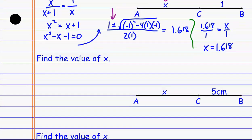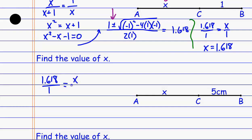For example, rather than deriving x as the geometric mean and doing the quadratic formula, I just have the golden ratio memorized and say the long piece, 1.618 compared to 1, should equal the long piece to the short piece — so x over 5. Then we cross multiply and solve. Plugging into my calculator, I get x equals 8.09 centimeters.